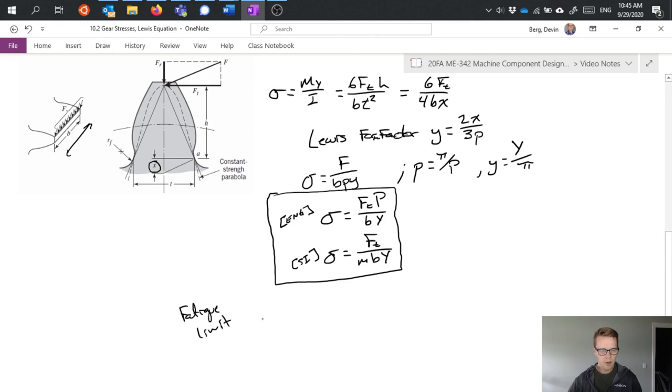0.5 S_u specifically for steel, and then we have a bunch of correction factors that we would factor in. We can apply our same fatigue analysis that we've already talked about previously in determining the limit here and comparing it against this stress that we've now calculated for our gear tooth.